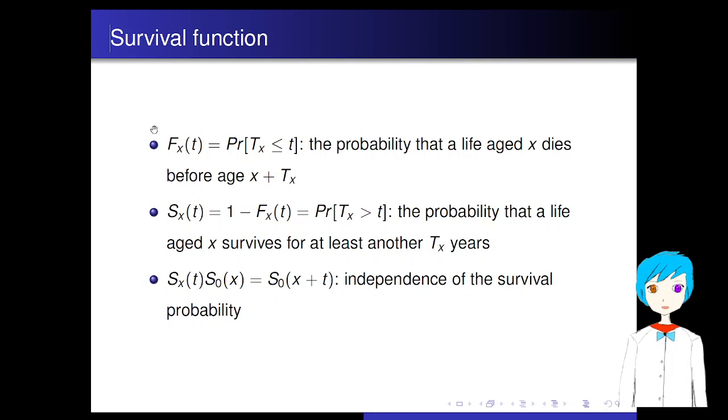Then, the important thing is the survival function. First, we have the death probability, F_x(t). It is the probability that a life aged x dies before age x plus t. S_x(t), which equals 1 minus F_x(t), is the probability that the life aged x survives for at least another t years.